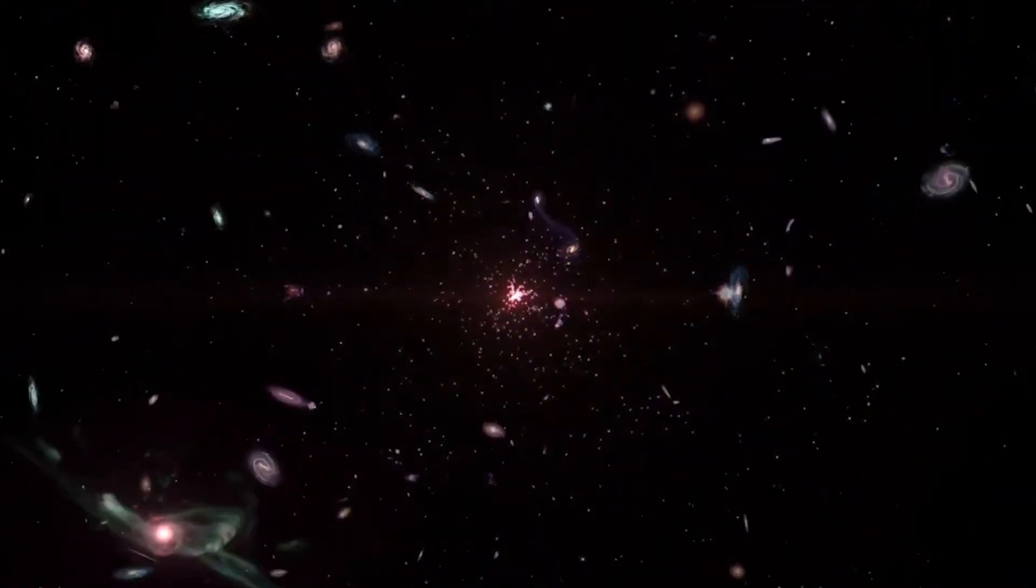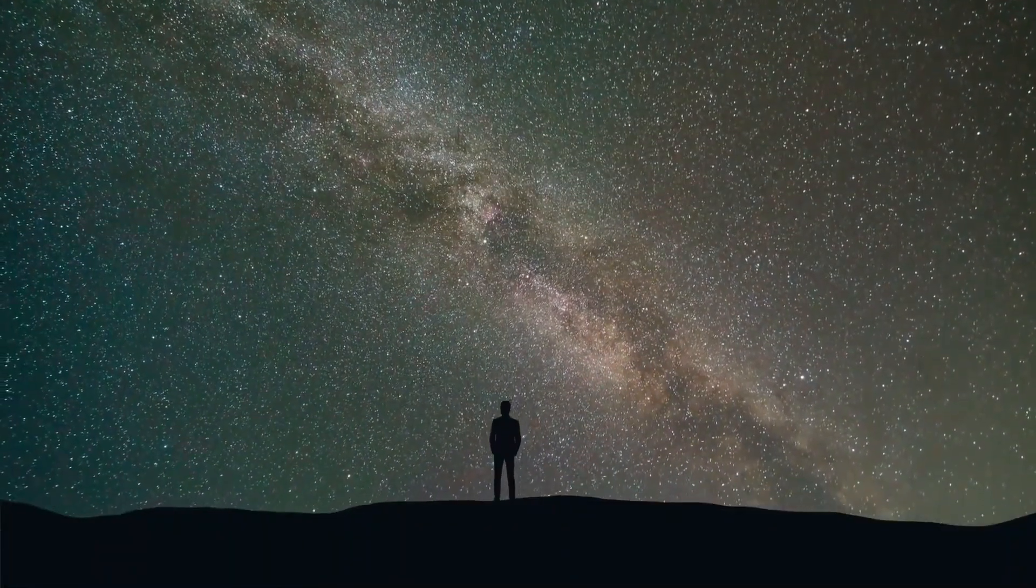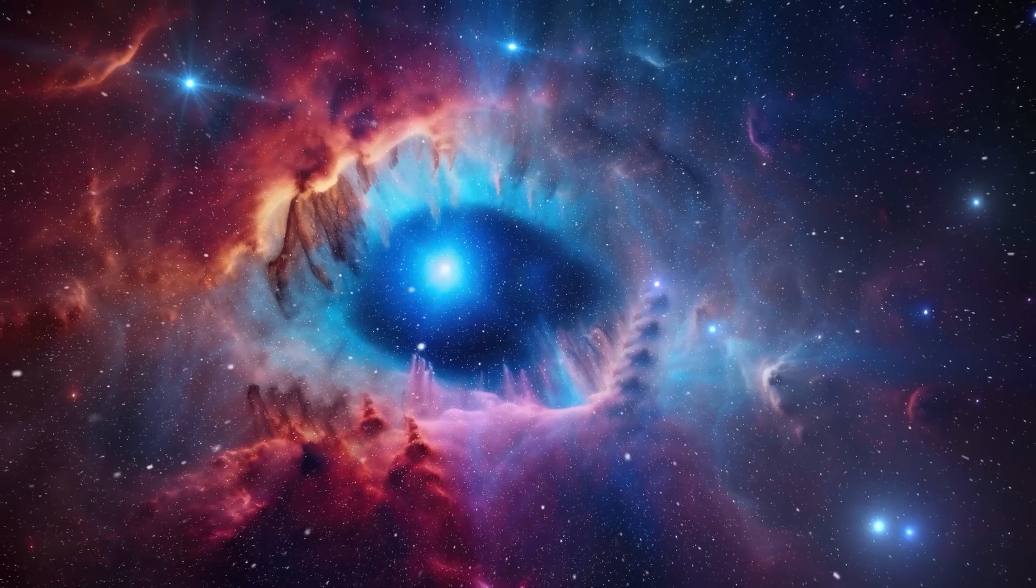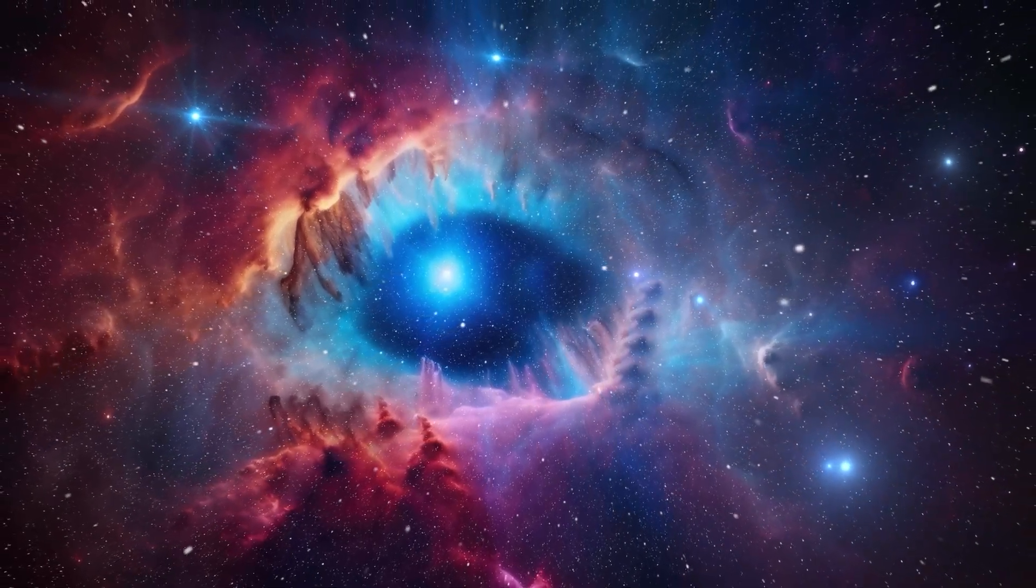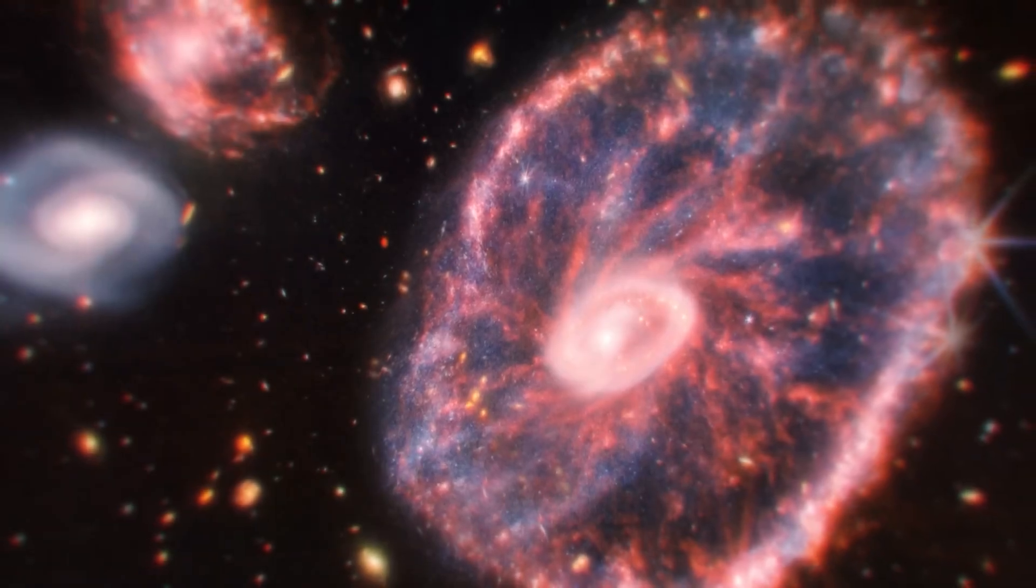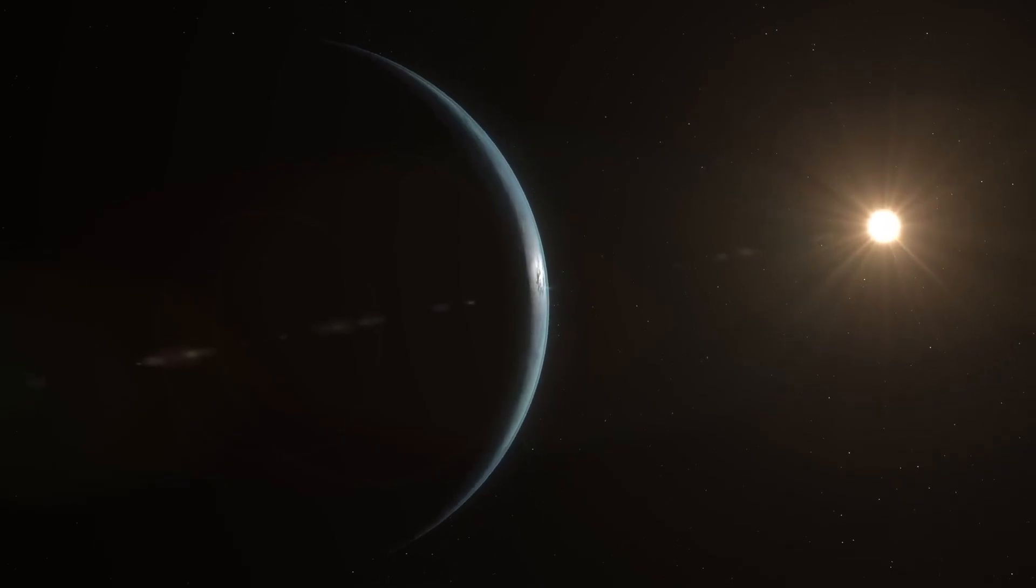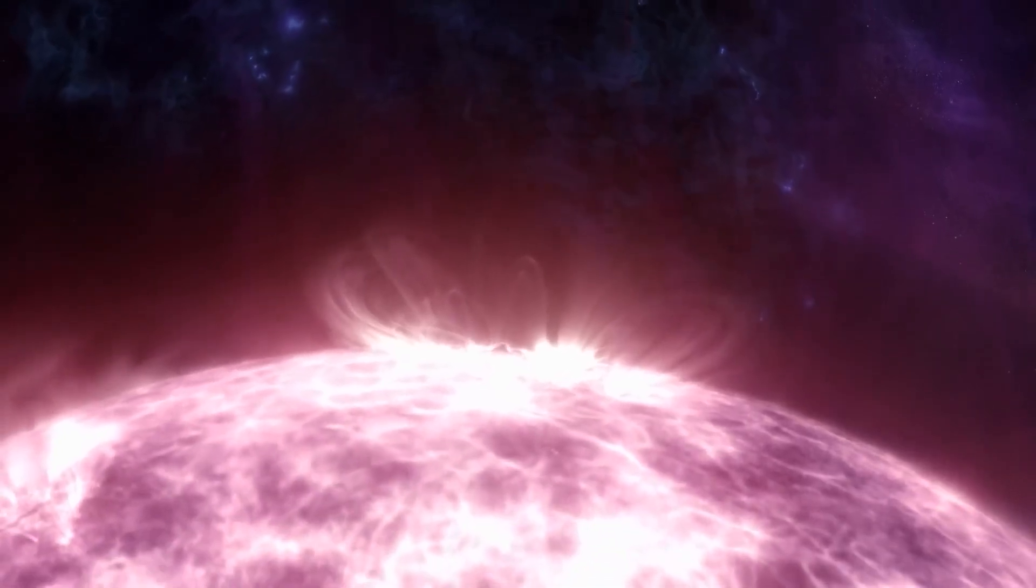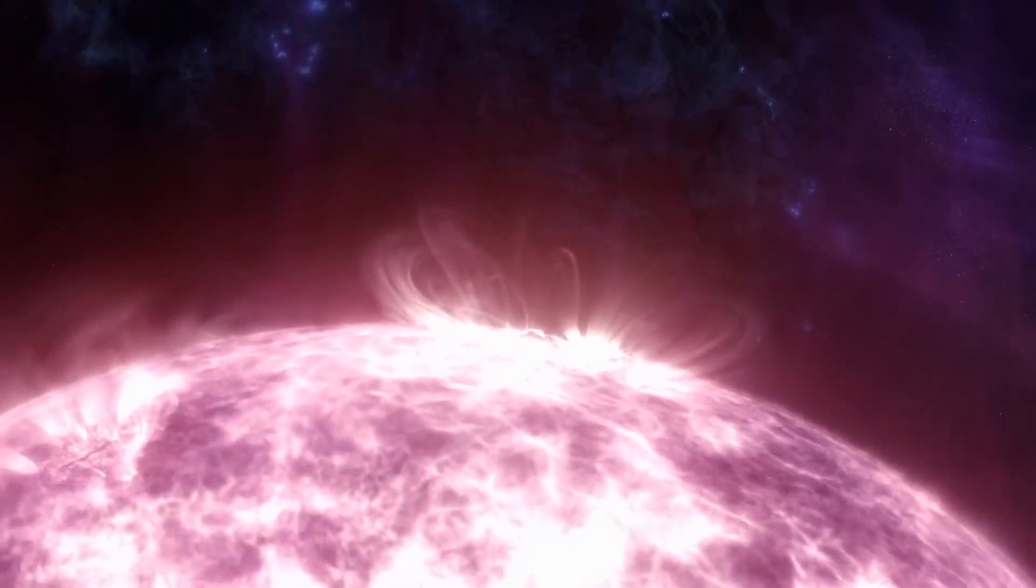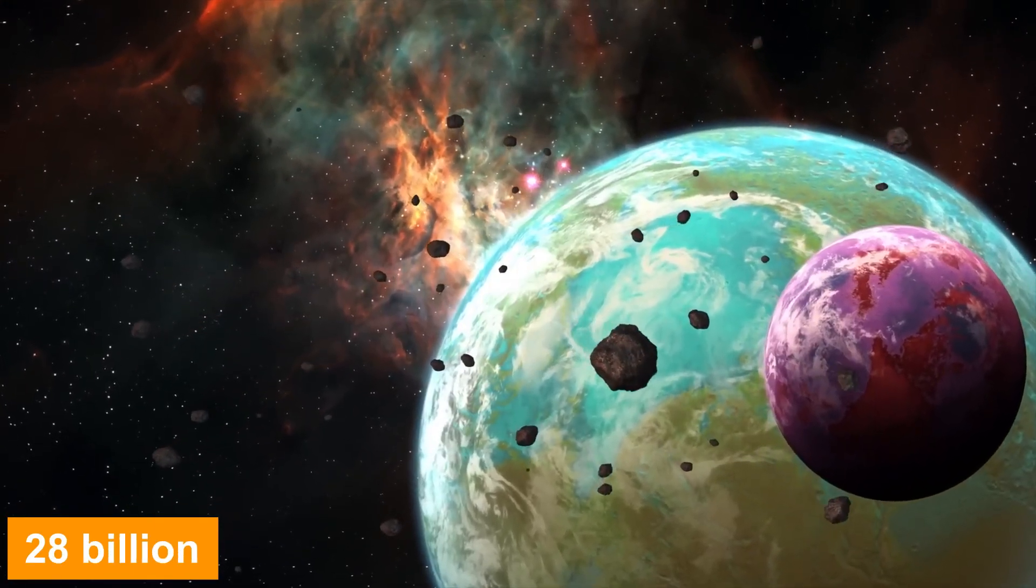The James Webb Space Telescope has uncovered the secrets of Irondale, the most distant star ever discovered in the universe, situated at the farthest reaches of time. Irondale is incredibly distant, with its light traveling for 13 billion years to reach us, due to a fortunate alignment in our line of sight. However, it's important to note that, taking into account the expansion of the universe, the actual distance to this star is approximately 28 billion light years.